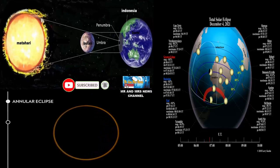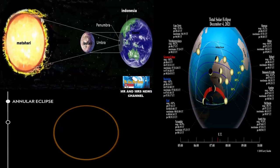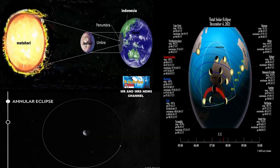Sebagai akibatnya, ketika bidang orbit berpotongan dan jaraknya sejajar, maka bulan baru dapat tampak sepenuhnya dan menutup piringan matahari.